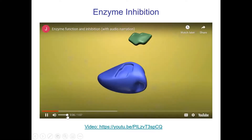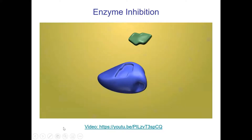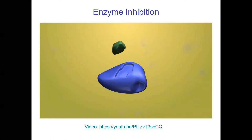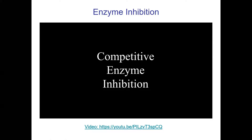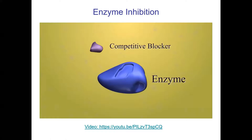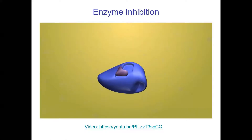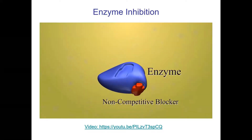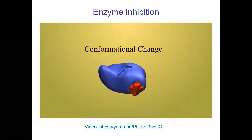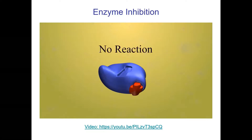During normal enzyme catalysis, the substrate encounters an enzyme with a specific active site, binding to form an enzyme-substrate complex. The enzyme facilitates breakdown of the substrate to products, which depart, leaving the active site free to catalyze another substrate. Competitive inhibition occurs when a blocker mimics the substrate and binds the active site, so when the substrate is encountered the active site is unavailable. Non-competitive inhibition involves binding away from the active site, causing a conformational change that alters the active site shape and prevents substrate binding.